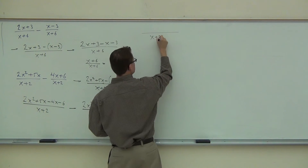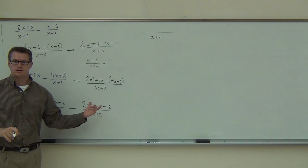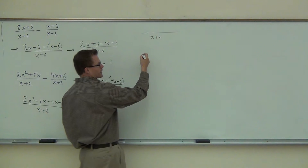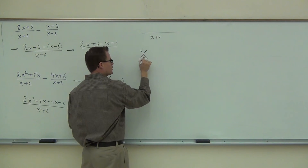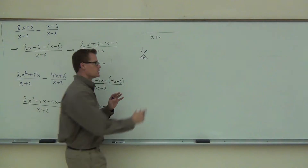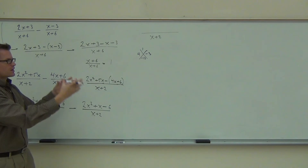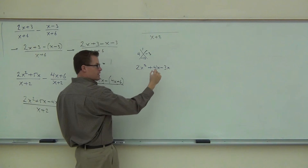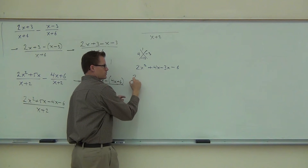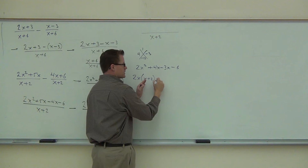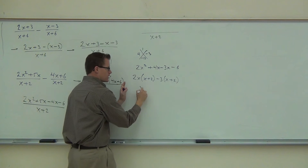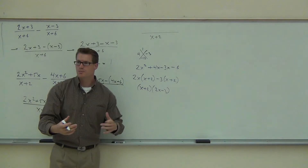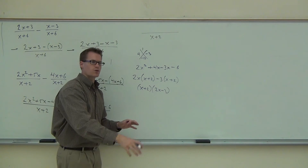I know the denominator doesn't factor, so x plus 2 stays the same. Does the numerator factor? Yeah. In order to check that, we're probably going to use a diamond problem, because there's a number up front. 1 over negative 12 tells me I'm working with positive 4 and negative 3. That adds to 1, that multiplies to negative 12. That's going to give us 2x squared plus 4x minus 3x minus 6. When we group this, we factor 2x out of here, we factor negative 3 out of here. We have exactly the same thing, and that right there is our new numerator. This is factoring — this is three weeks old at this point, so we're going to start moving quickly through the factoring portion.